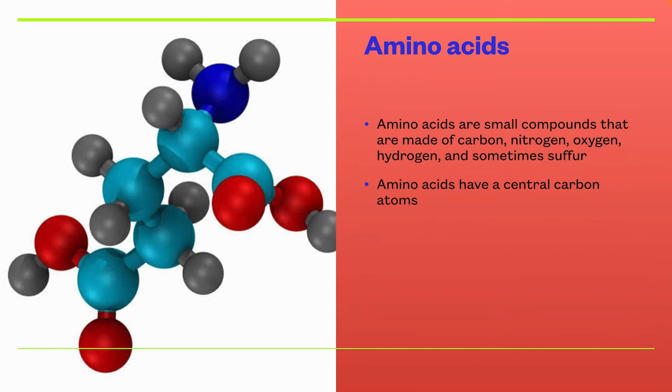Amino acids. Amino acids are small compounds that are made of carbon, nitrogen, oxygen, hydrogen, and sometimes sulfur. Amino acids have essential carbon atoms. Basically this is what the amino acids look like: has the red, the regular blue, that sky blue balls and the gray ones outside.